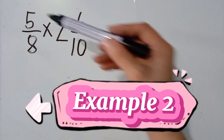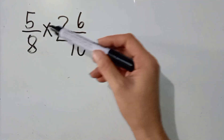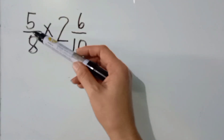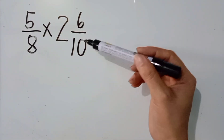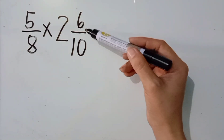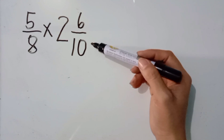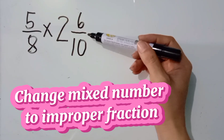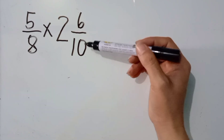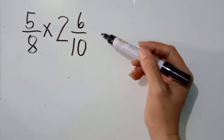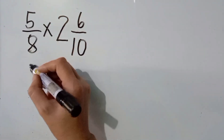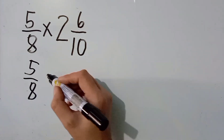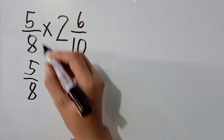Next example: 5 eighths times 2 and 6 tenths. So, we are multiplying a proper fraction and a mixed number. So, ano po unan natin gagawin dito? We are going to change first this mixed number to improper fraction. We are going to copy 5 over 8 kasi proper fraction na po siya. Just copy lang po.